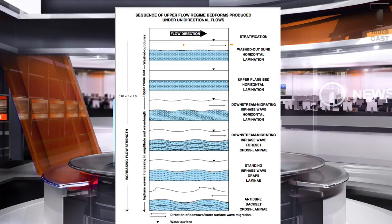As flow velocity increases, different bed forms are created. They can be identified by their distinct horizontal layering within the rock record. Upper plane beds can be well defined, unlike lower plane beds which are poorly defined within the rock record, due to there being a transitional zone from non-movement bed settings to dune-like bed forms.